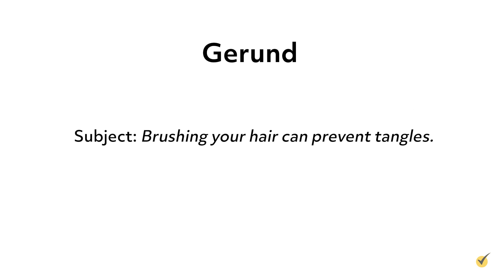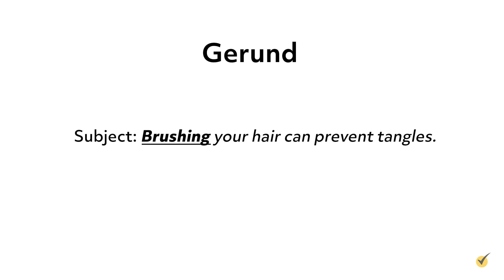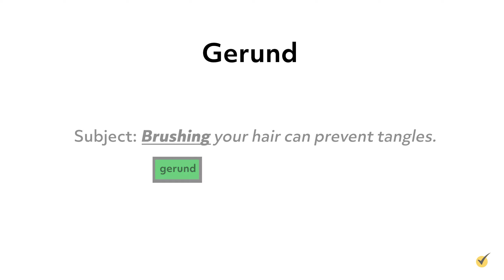Here's an example of a gerund in the subject position: 'Brushing your hair can prevent tangles.' Brushing is an action that is being done, which would normally make it a verb. However, notice that the act of brushing has become the thing that the sentence is about. We know that things fall into the noun category, so the word brushing is a gerund functioning as the subject of the sentence.